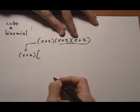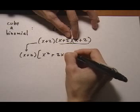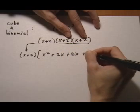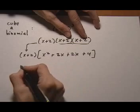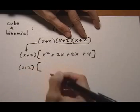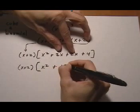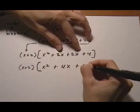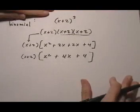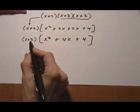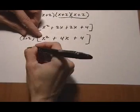Times FOILing out the second two we get x² + 2x + 2x + 4. Now collect like terms. Bring (x + 2) down again. We have x² + 2x + 2x is +4x, and bring down the +4.